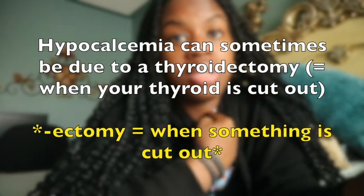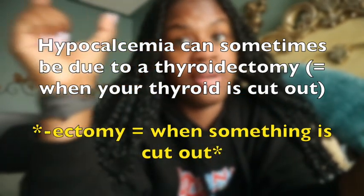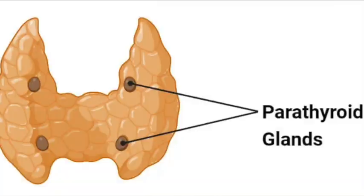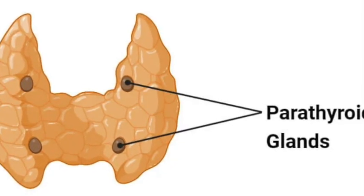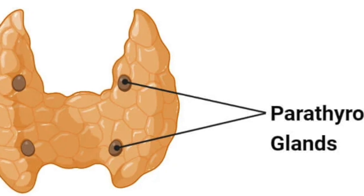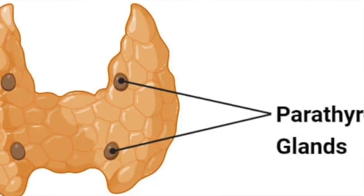Hypocalcemia commonly occurs after a thyroidectomy. The parathyroid glands sit behind the thyroid and may be accidentally removed during surgery. Since parathyroid glands regulate calcium release, their removal causes calcium to drop — leading to positive Trousseau's and Chvostek signs.